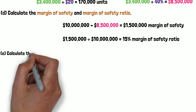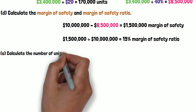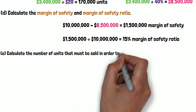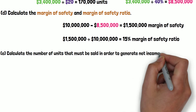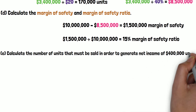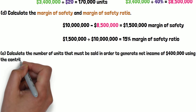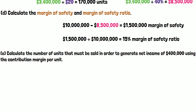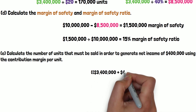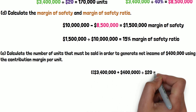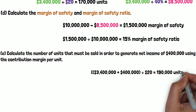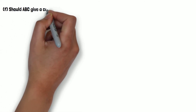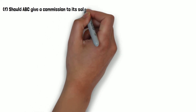The fifth question: calculate the number of units that must be sold to generate an operating income of $400,000, using the contribution margin per unit. The formula is: fixed cost of $3.4 million plus the desired operating income of $400,000, divided by the contribution margin per unit of $20. The answer is 190,000 units.